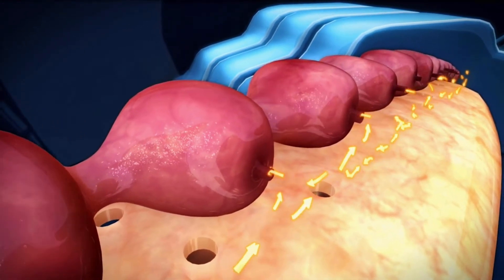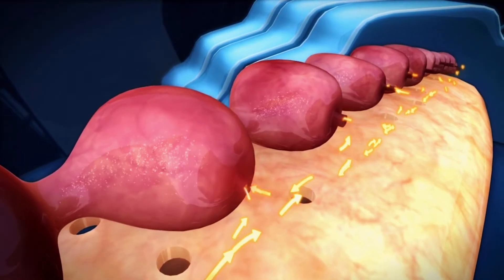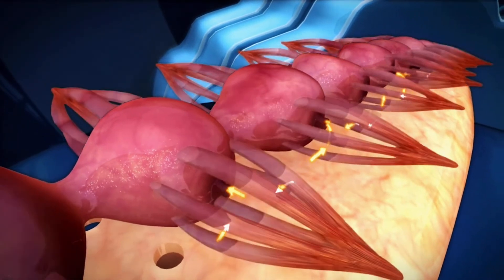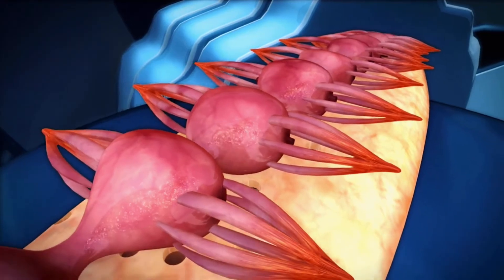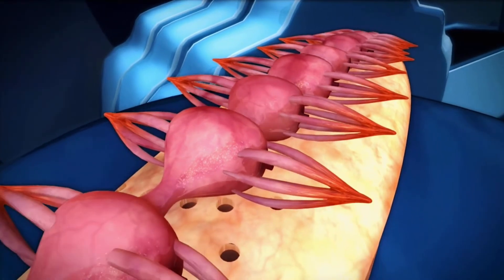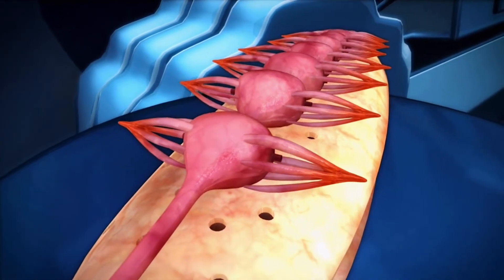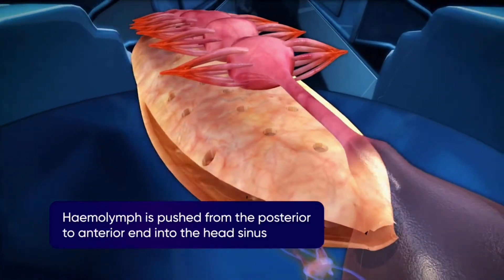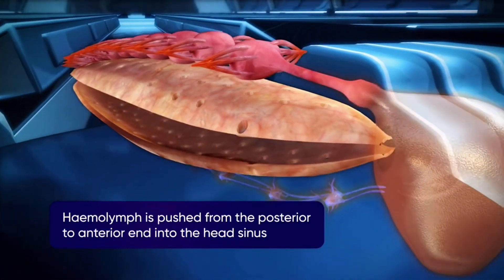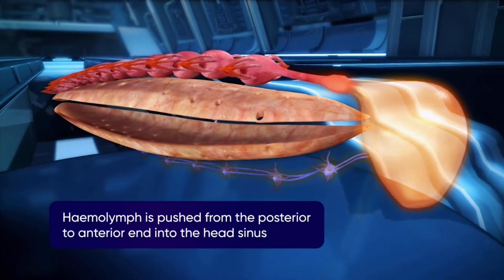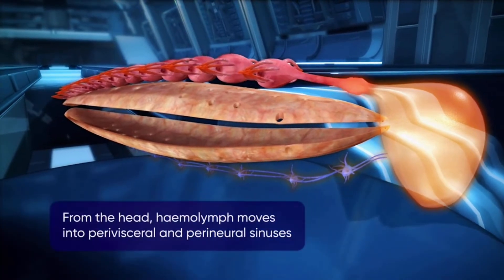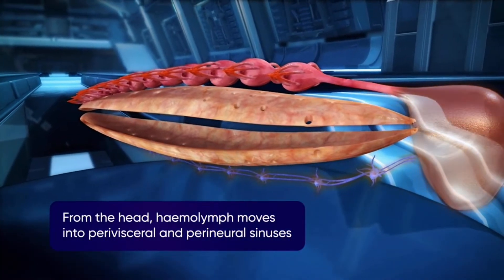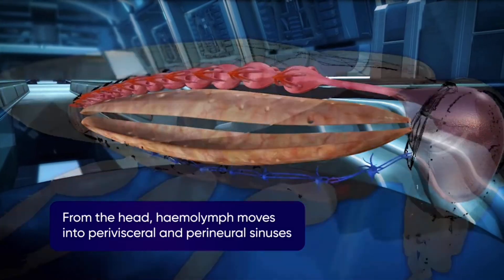The hemolymph from the pericardial sinus enters the heart through ostia — a pair of valvular apertures on each chamber. The valves allow flow from the pericardial sinus into the heart and not vice versa. The peristaltic movements of the heart chambers carry the hemolymph from the posterior to the anterior end into the head sinus, from where it returns to the perivisceral and perineural sinuses.